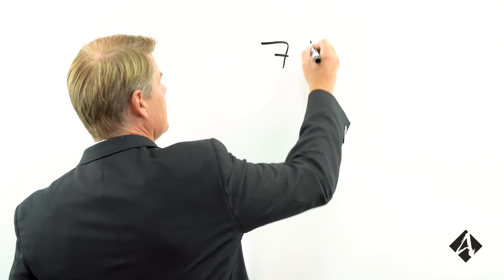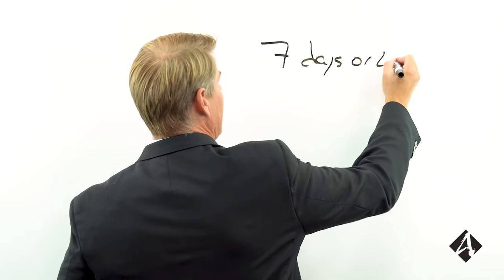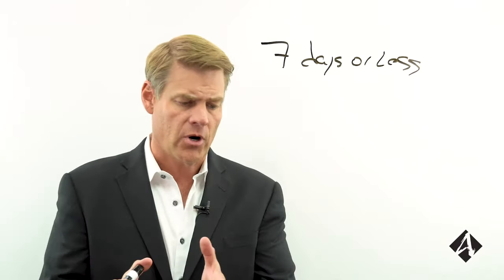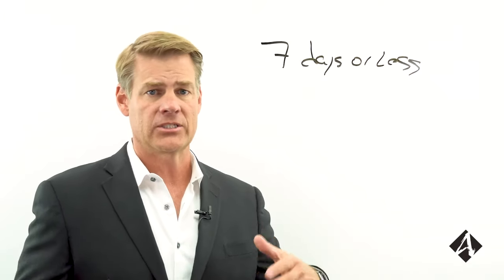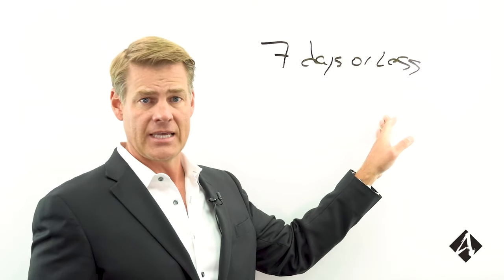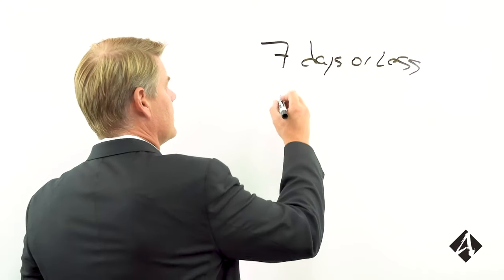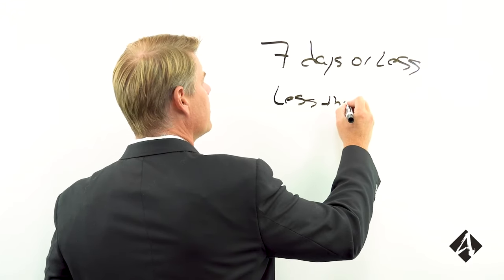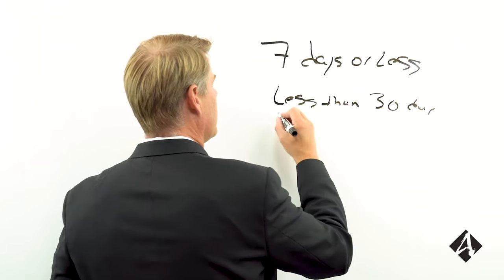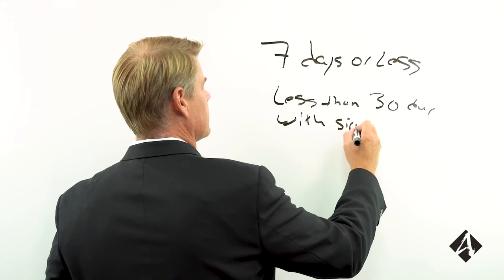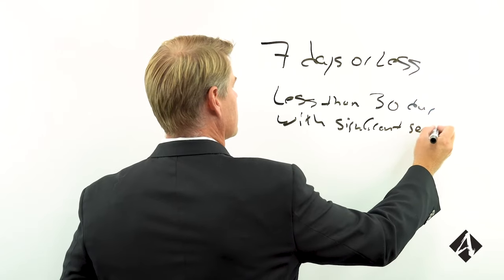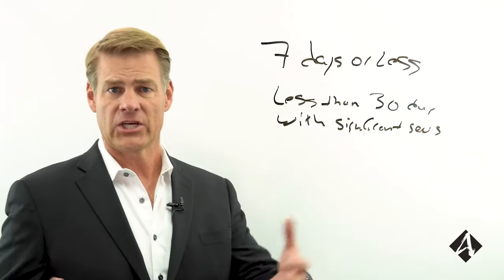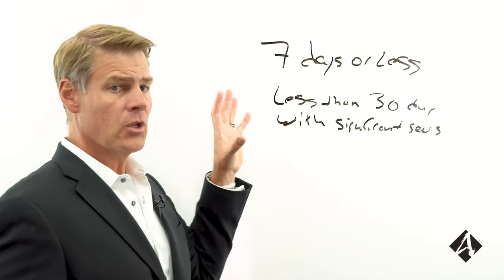So what am I getting at? All right, so here's how the Internal Revenue Code defines short-term rental. If you have a property that you ran out for an average of seven days or less, all right? So if you run out your property for seven days or less, that's the average. So you add them all up, how many rental days you have, and what was the average stay. If it's seven days or less, or less than 30 days with significant services—I'll get into that in just a moment.